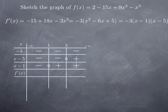f prime is the product of these three factors. So on the interval negative infinity to 1, all three factors are negative. I have an odd number of negative factors, so I get a negative product. On the interval from 1 to 5, I have two negative factors, so an even number of negative factors, so the product is positive.